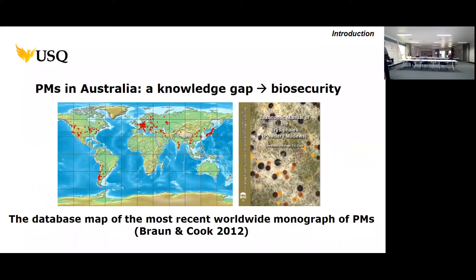Now let's come back to Australia. Where is the knowledge gap? To show this, I want to show the database map from the most recent worldwide monograph, written by Uwe Braun and Roger Cook in 2012. The map shows where all the specimens studied to produce this monograph came from — and as you can see, there are no red dots in Australia. There are red dots even in New Zealand, but not in Australia. That is the knowledge gap.